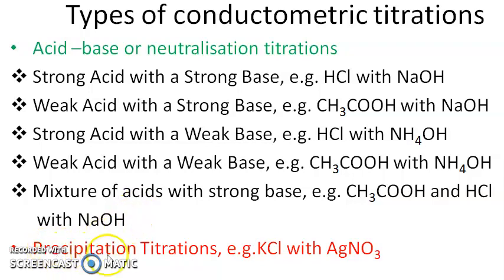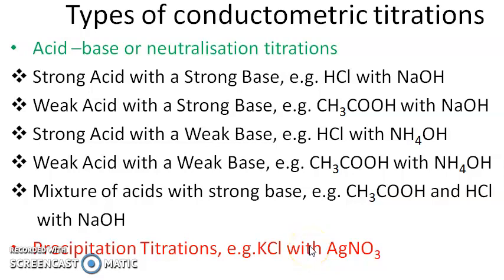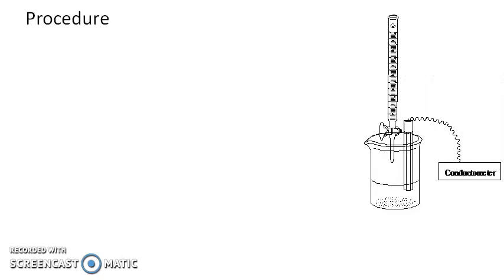Precipitation titration is another type that can be carried out conductometrically. For example, a titration between KCl and AgNO₃ can determine the concentration of either species. The advantage here is that during precipitation titrations, precipitates are formed and monitoring by the indicator method becomes difficult; this can be overcome by carrying out the titration conductometrically.